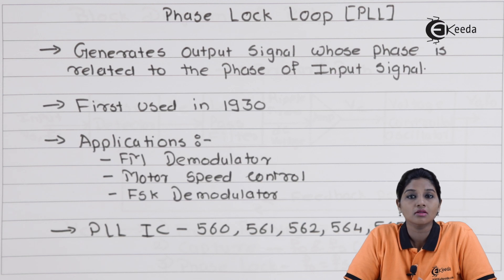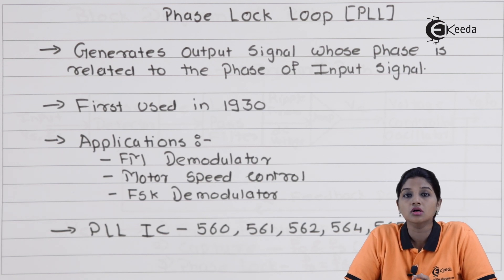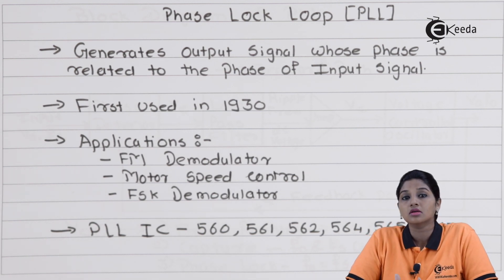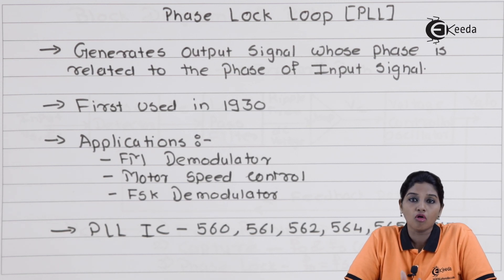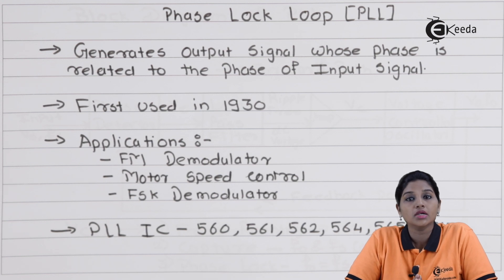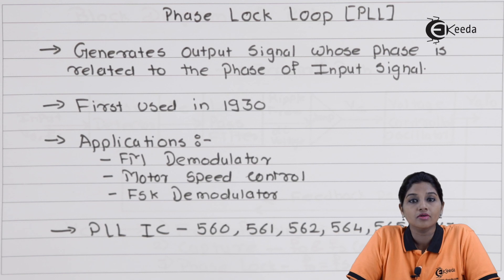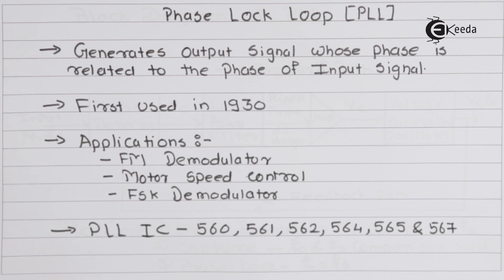PLL is used in applications like FM demodulator, frequency multiplier, FSK demodulator, frequency division, and many more. It is considered one of the important basic building blocks of many electronic circuits. PLL is available in the form of a single IC chip, and various IC numbers are 560, 561, 562, 564, 565, and 567. These ICs can be used in applications like FM demodulator, FSK demodulator, speed control of motor, frequency division and multiplier, and many more.